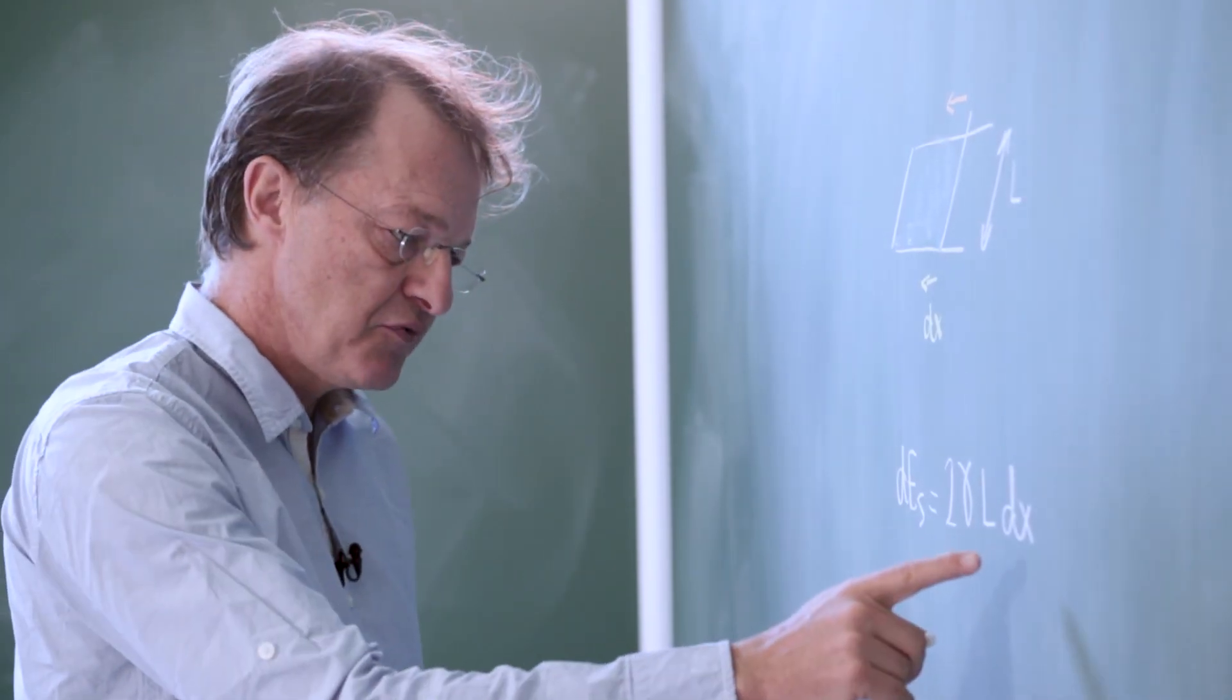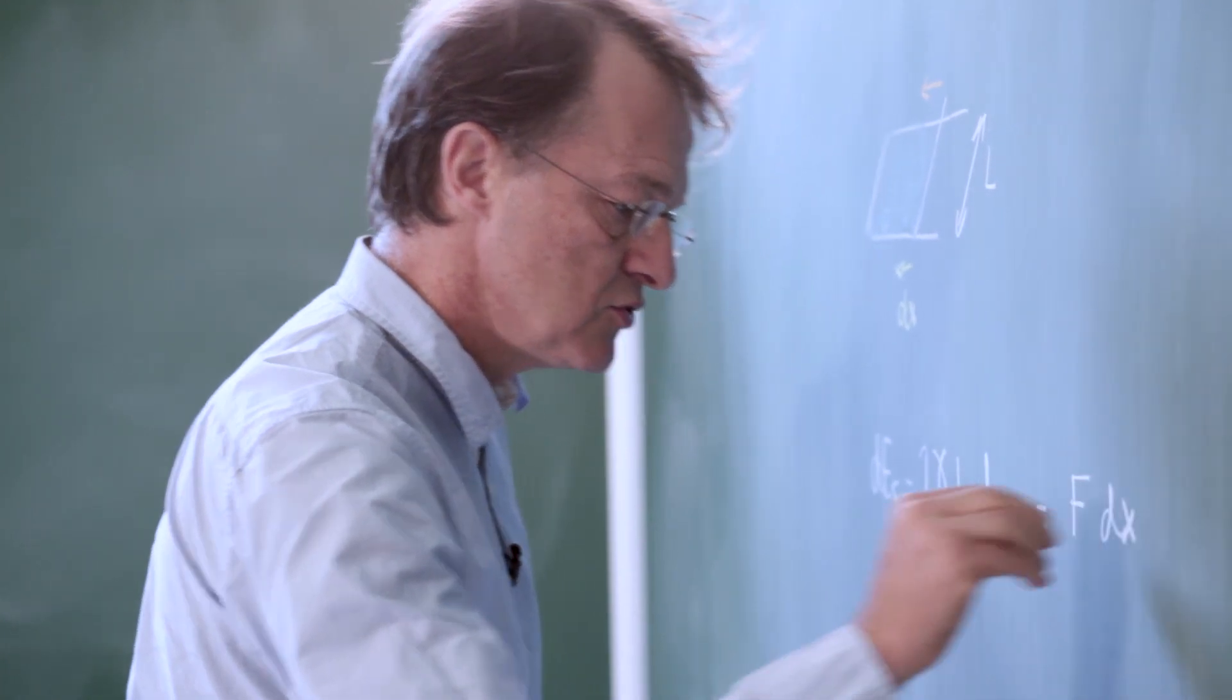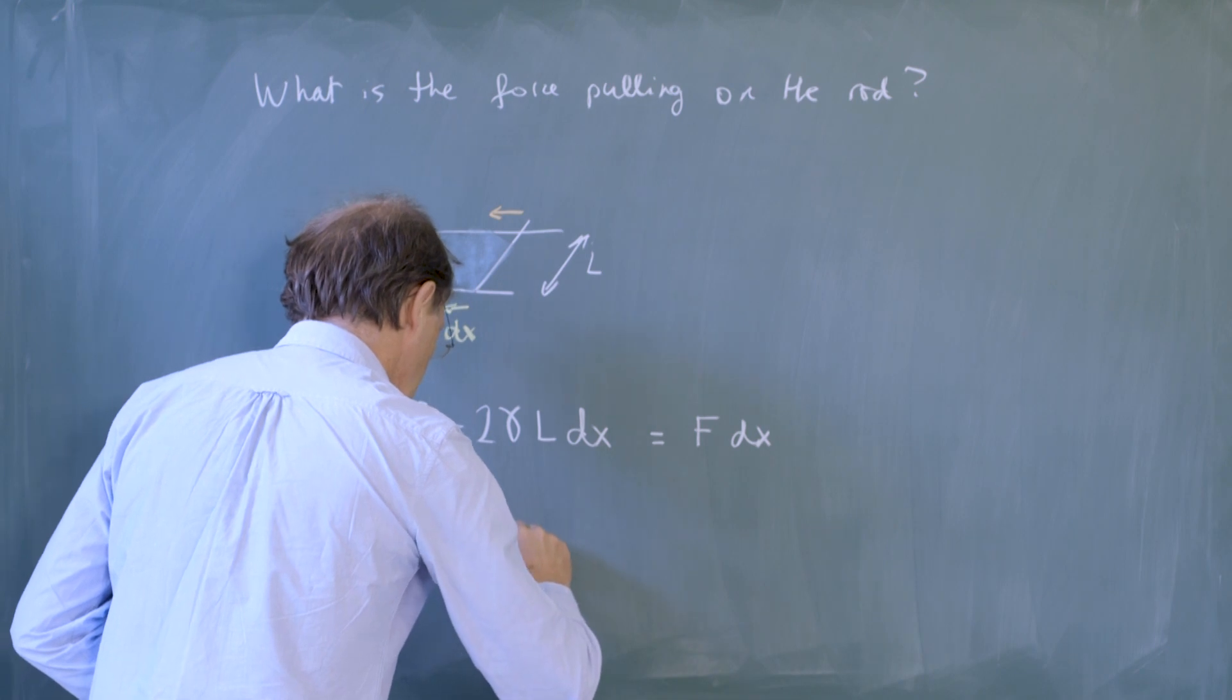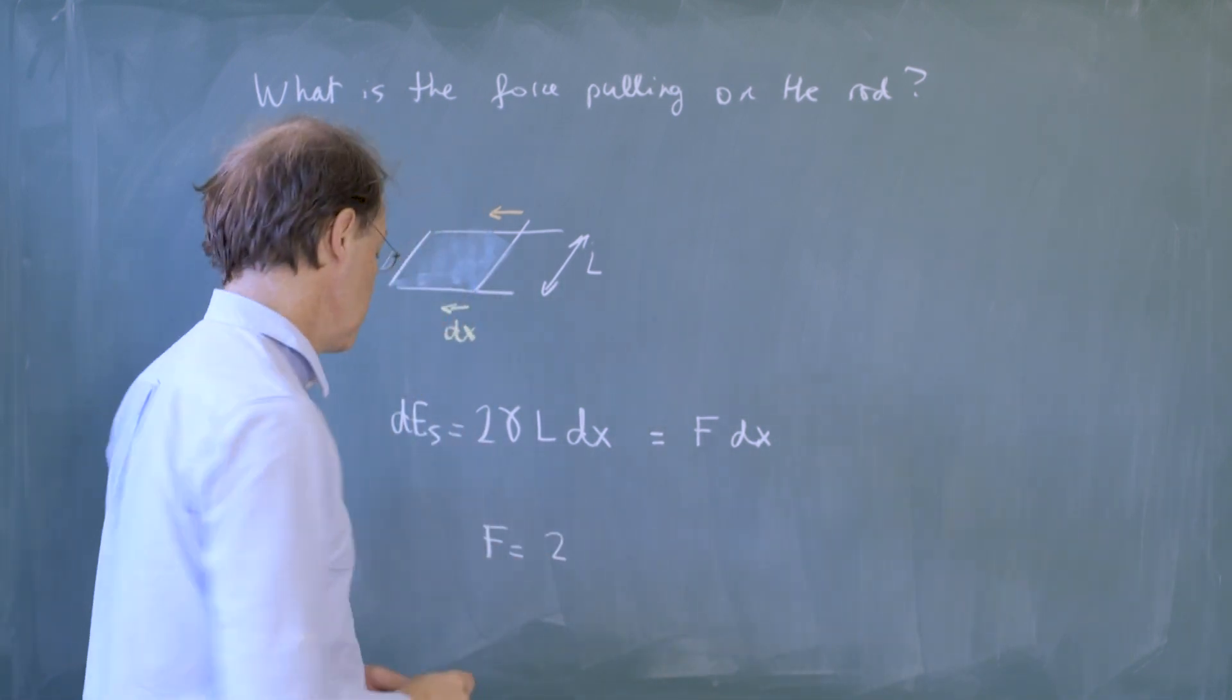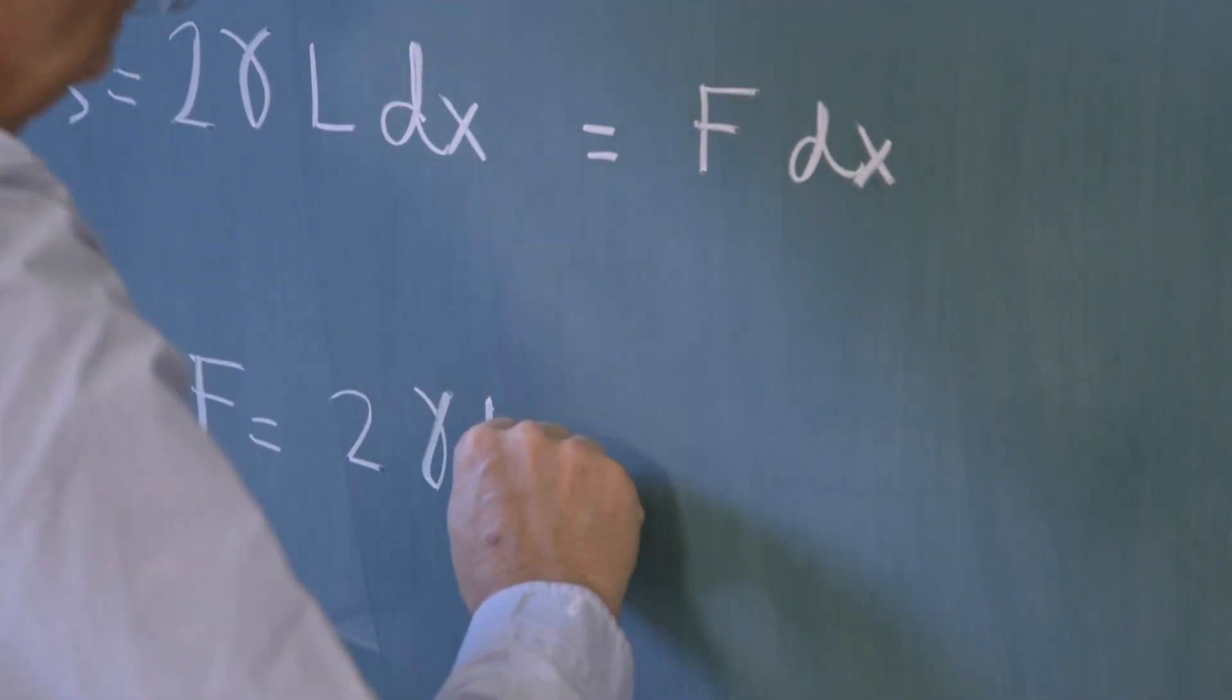This change of energy can be seen as the work of the force pulling the rod, from which we immediately deduce that the force is twice, because of the presence of two interfaces, gamma (surface tension of the soapy water) times L.